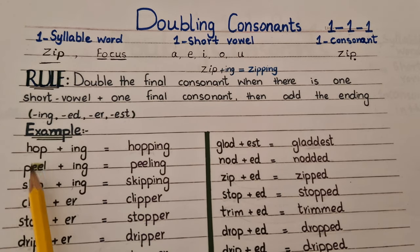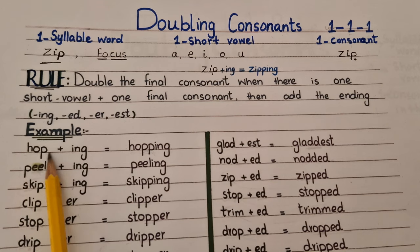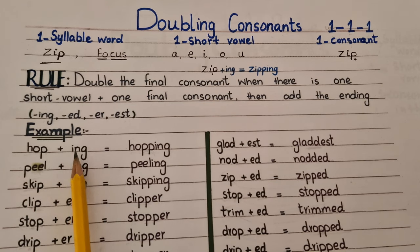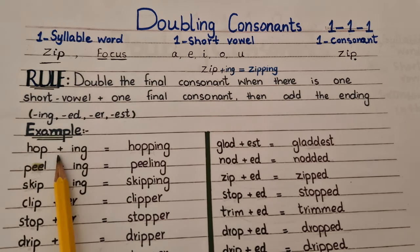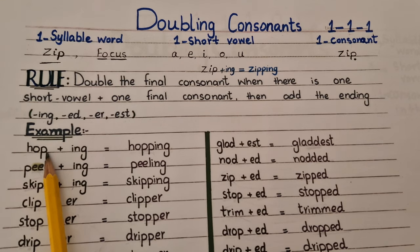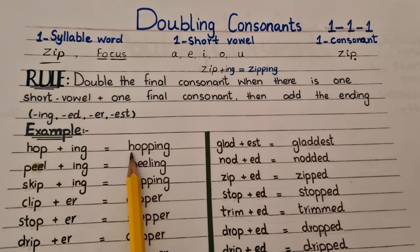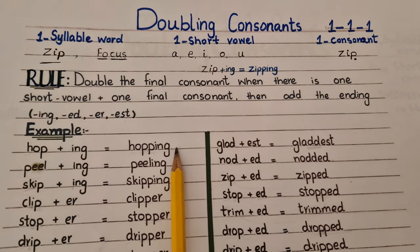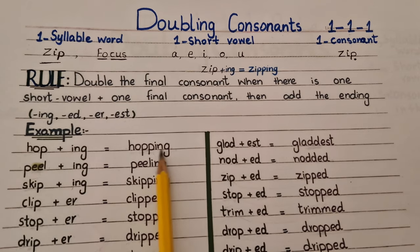Let's look at some examples. This is 'hop'. When we add -ing at the end of the word, then we will double the final consonant — we will double the letter P. It will become 'hopping'.